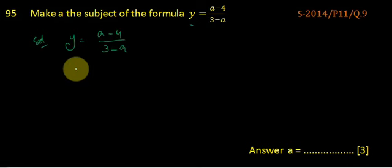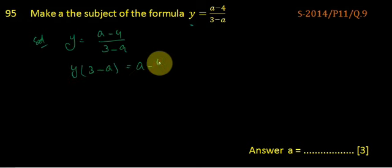Okay, now we have to shift the denominator. So it will become Y multiplied by 3 minus A equals A minus 4.